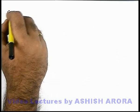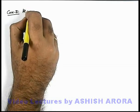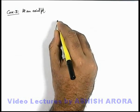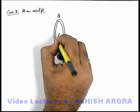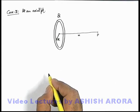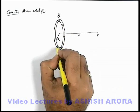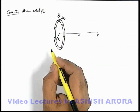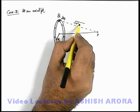Let's continue with the second case: calculation of electric potential due to a ring at an axial point. We are given a uniformly charged ring of radius r with total distributed charge q. On its axis, at a distance x, we have a point P. We are required to find the electric potential at point P due to the charge distributed on the ring. We consider a small element of charge dq at one point on the circumference of the ring. This dq is located at a distance √(x² + r²) from point P.